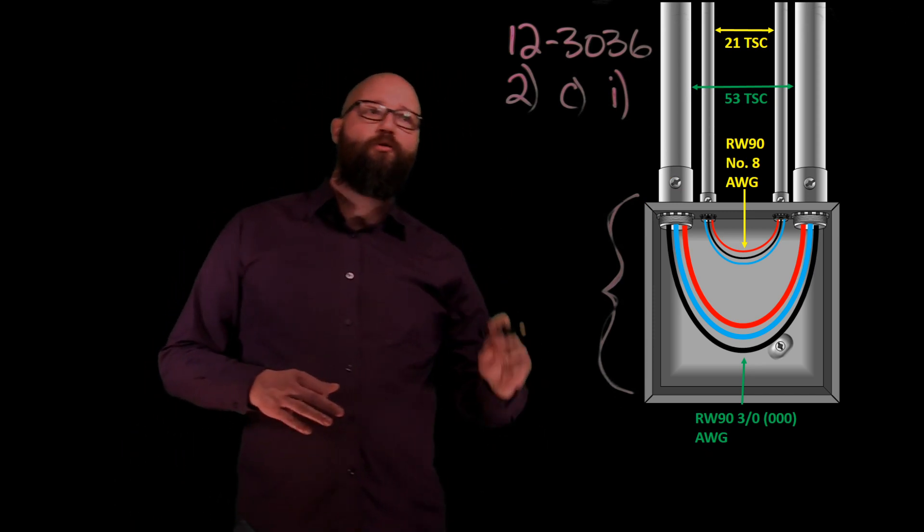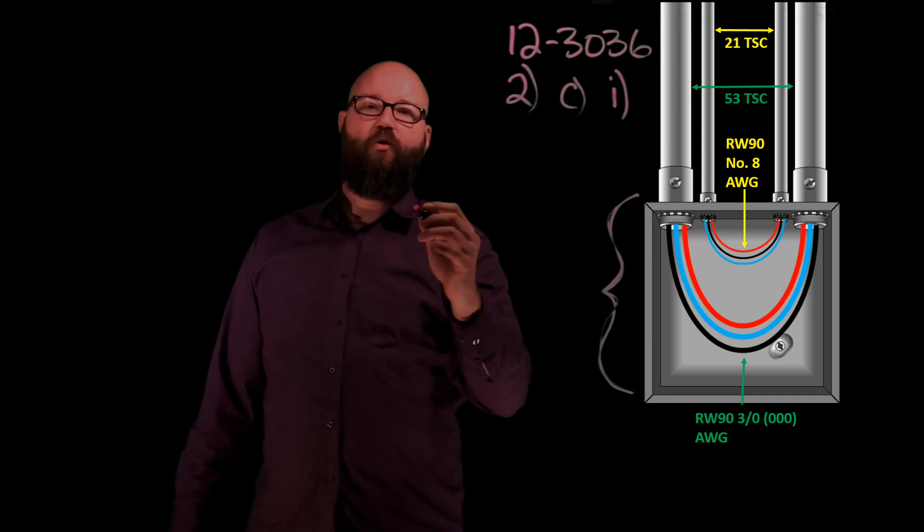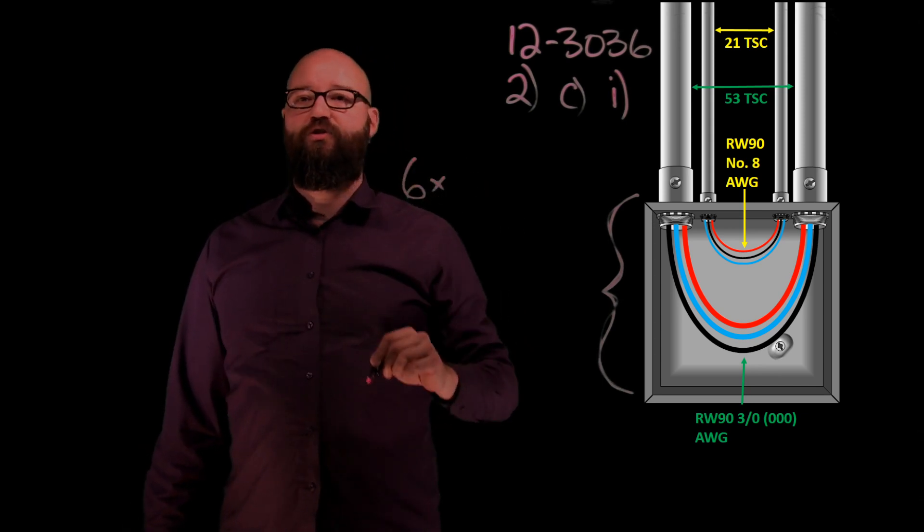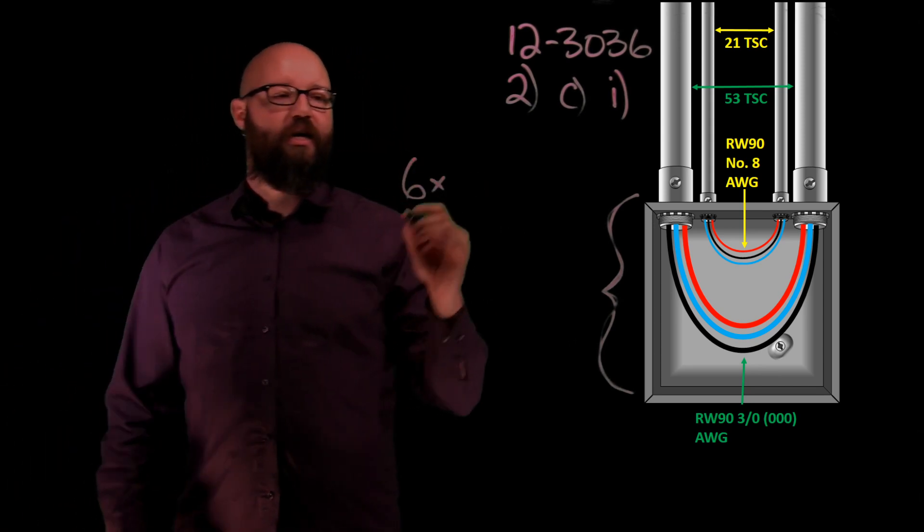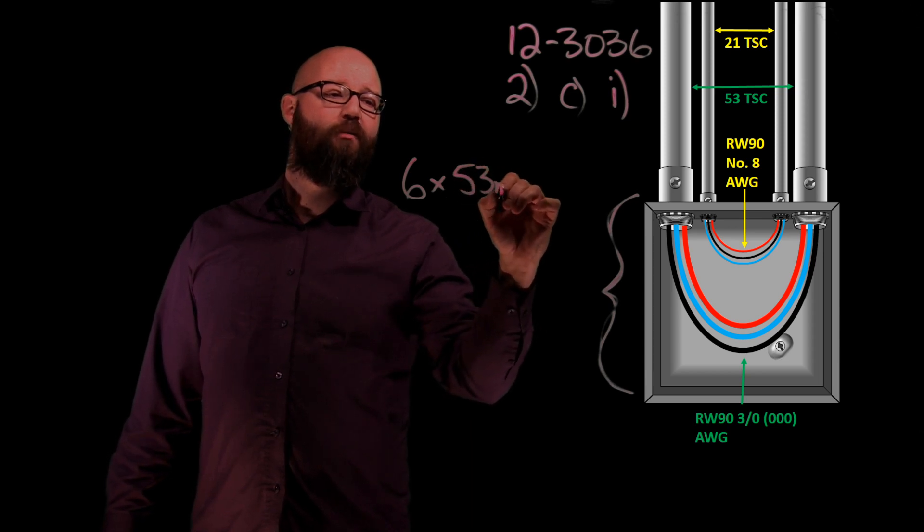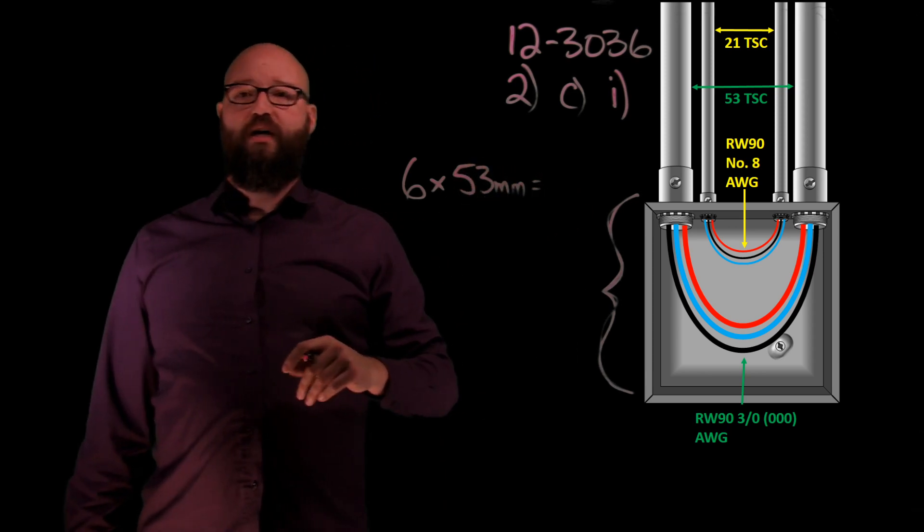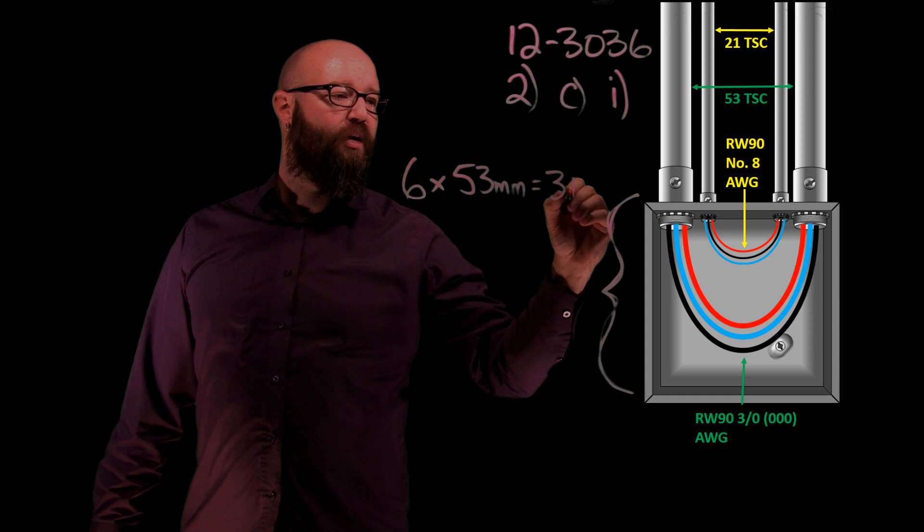So if you remember, 12-30-36 tells me that we are going to take six times the largest trade size diameter, which in this case is 53 millimeters, which gives us a measurement of 318.